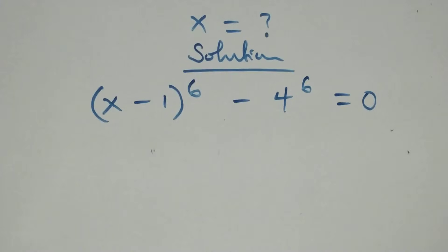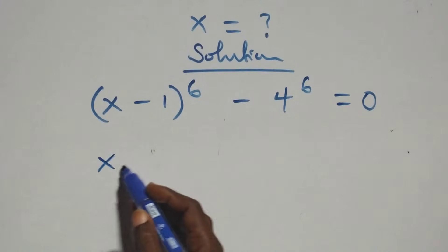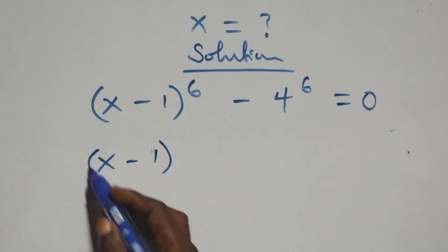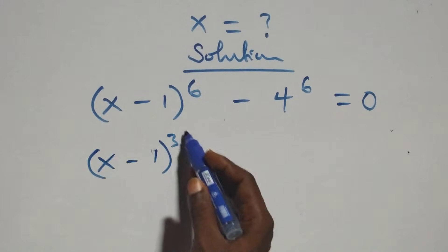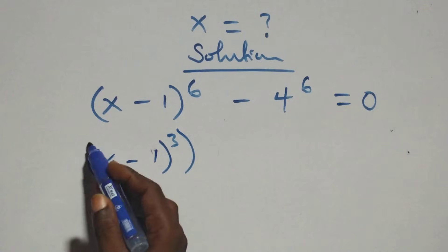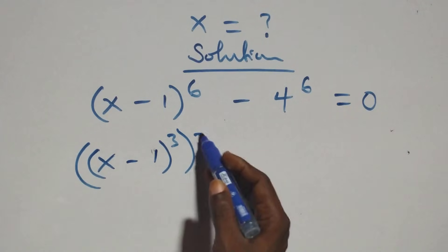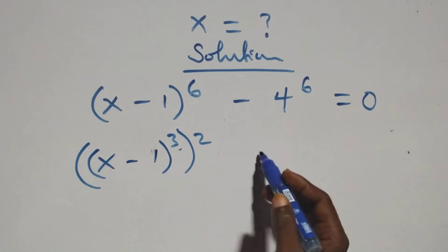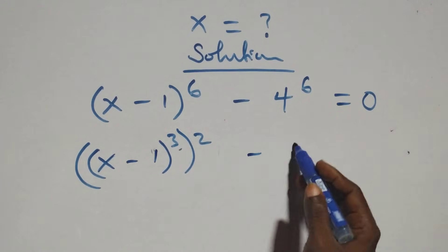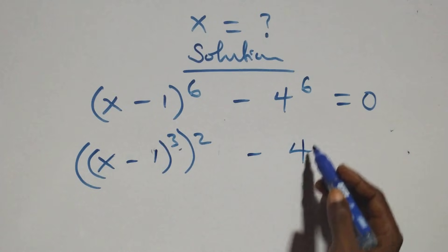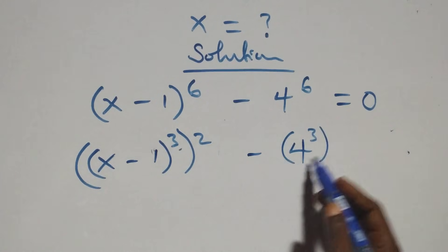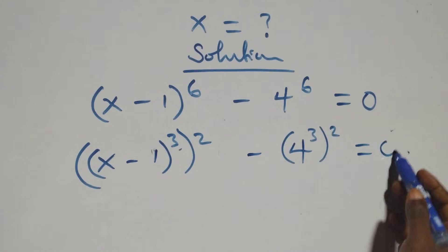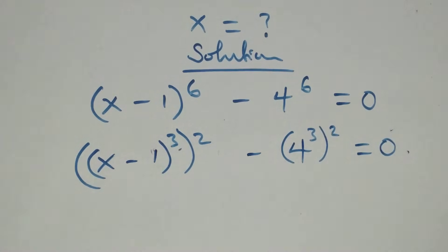The next step: we can express this as (x minus 1) raised to power 3, then raised to power 2, since 2 times 3 equals 6, minus 4 raised to power 3 raised to power 2, equals 0.